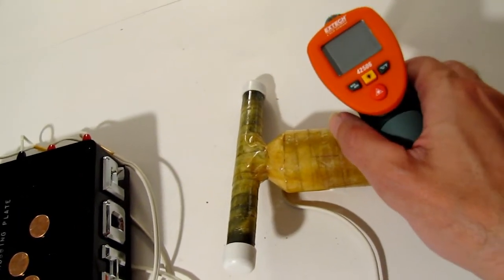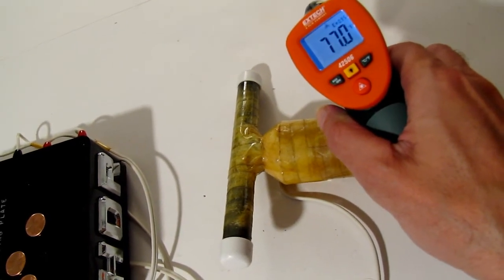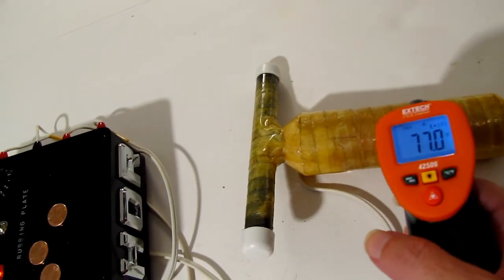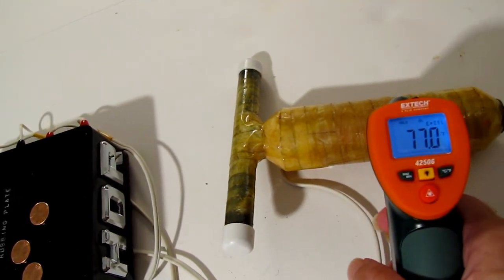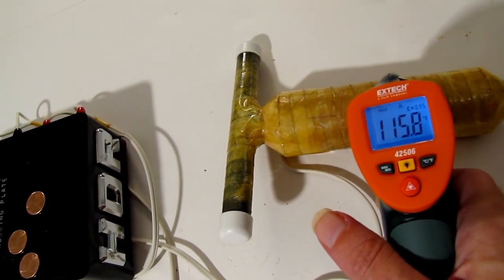77 degrees. So, the electromagnet should be about 77 degrees. It's not. Now it's 115.8.